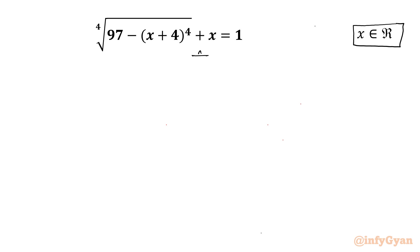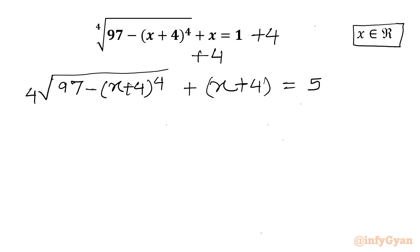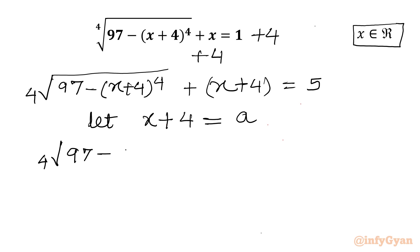I will add 4 to the LHS and RHS. Then our equation will become: 4th root of (97 minus x plus 4 whole power 4) plus x plus 4 equal to 5. As you can see x plus 4 is there, so I will consider our first substitution: let x plus 4 equal to A. So our radical equation will become 4th root of (97 minus A power 4) plus A equal to 5.